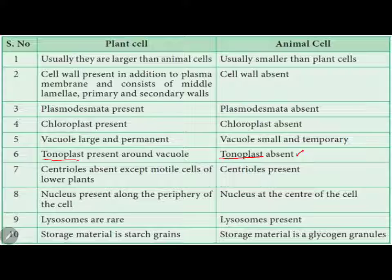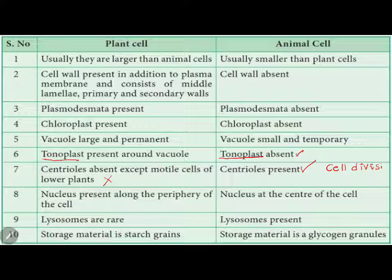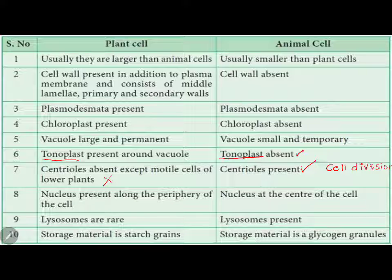Centrioles are absent in plant cells except in motile cells of lower plants, whereas centrioles are present in animal cells. Centrioles and cell division go hand in hand — the distribution of chromosomes during cell division is because of centrioles. Plants lacking centrioles makes their cell division somewhat less organized compared to animal cells. The nucleus in plant cells is positioned along the periphery of the cell, while in animal cells the nucleus is at the center — a more organized structure.